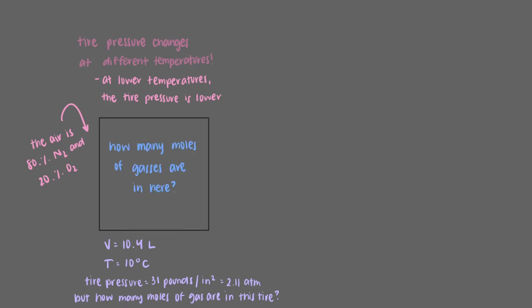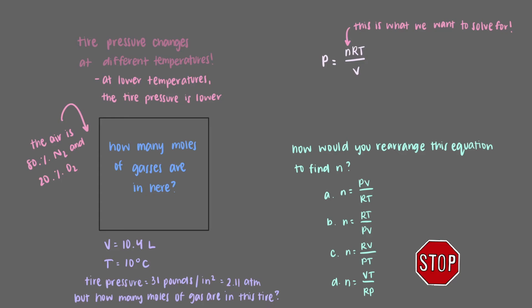Now we want to calculate the number of moles of gas in our beaker. We will use the ideal gas law equation, P equals nRT over V, to help us. We know all of the variables except for n, the number of moles of gas, which is what we want to solve. Rather than using the equation as it is, it's helpful to rearrange it to equal the variable we're trying to find. How would you rearrange this equation to find n?